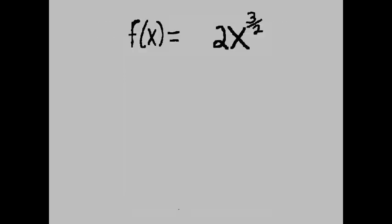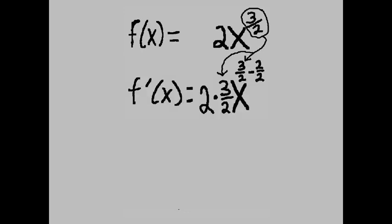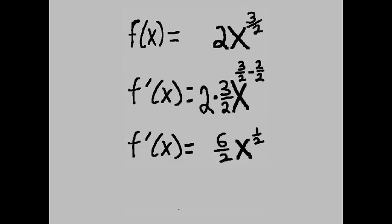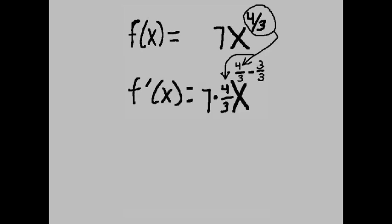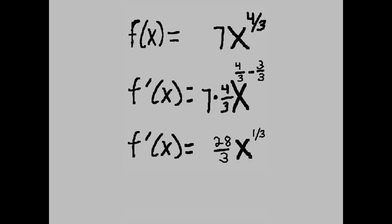Fractional exponents. f of x equals 2x to the 3 halves power. f prime of x equals 2 times 3 halves x to the 3 halves minus 1 power, which equals 3x to the 1 half power. Next: f prime of x equals 7 times 4 thirds x to the 4 thirds minus 3 thirds power, that equals 28 thirds x to the 1 third power.